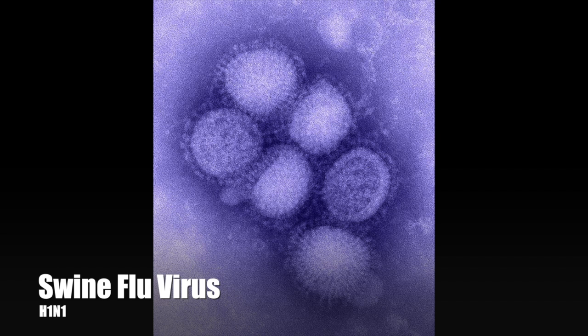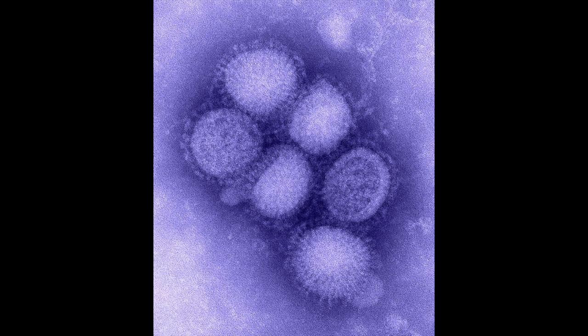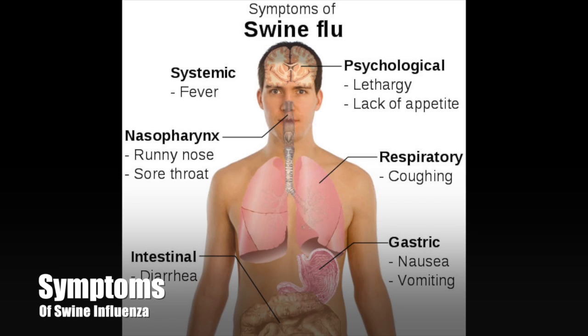Swine Influenza Virus, SIV, or Swine Origin Influenza Virus, SOIV, is any strain of the influenza family of viruses that is endemic in pigs. As of 2009, the known SIV strains include Influenza C and the subtypes of Influenza A, known as H1N1, H1N2, H2N1, H3N1, H3N2, and H2N3.